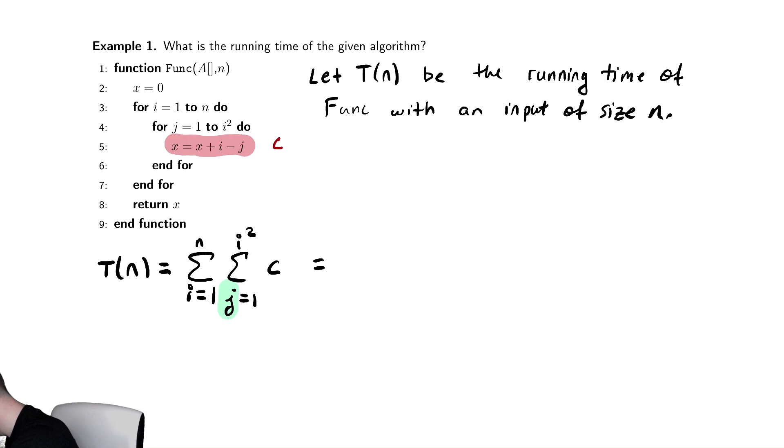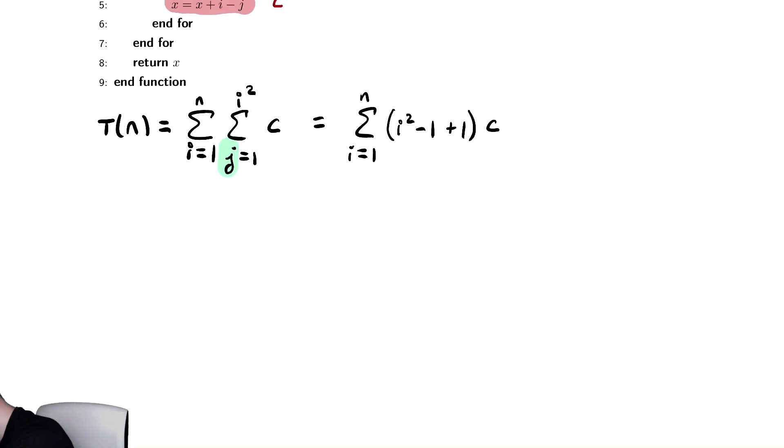So we can take that constant c and multiply it by the number of terms of the summation. So this equals the sum from one to n of - the number of terms in that summation is going to be the top bound minus the bottom bound plus one times the summand c. And then maybe we do our algebra to simplify this expression. So this equals the sum from i equals one to n of c·i².